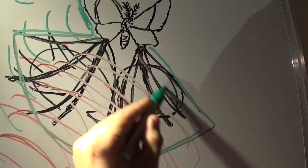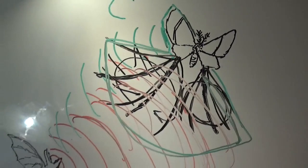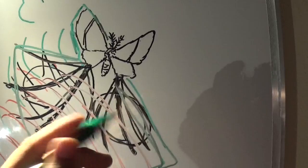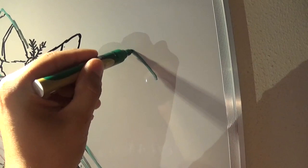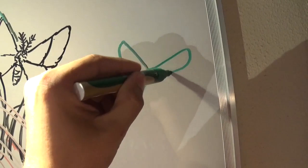Because if the bat is going to see a silhouette of this insect, then it's not going to look like this. It's not a beautiful drawing, but it's not going to look like this. It's going to look like this.